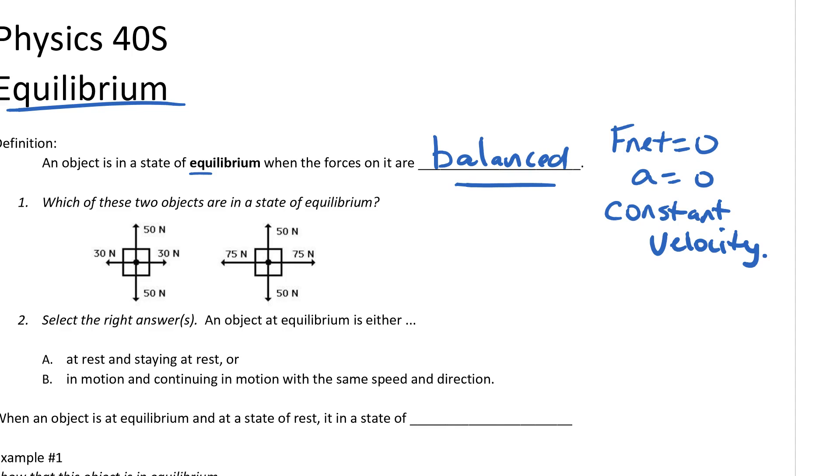Which of these two objects are in a state of equilibrium? Check it out. Make your choice. And yeah, it's a bit of a trick question. The answer is both of them are in a state of equilibrium. You'll notice that this 30 cancels out, and these two 50s cancel out, and so on with the other one.